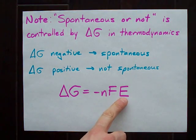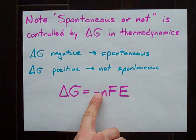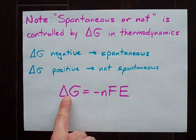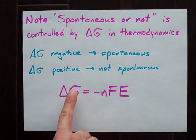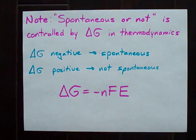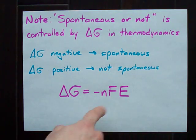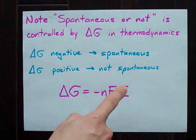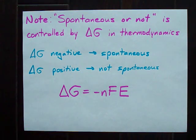If E is negative here, this negative will cancel it out. Delta G will be positive. Positive delta G, positive Gibbs free energy, means the reaction is not spontaneous. And that's why positive E cell means spontaneous. Negative E cell means not spontaneous.